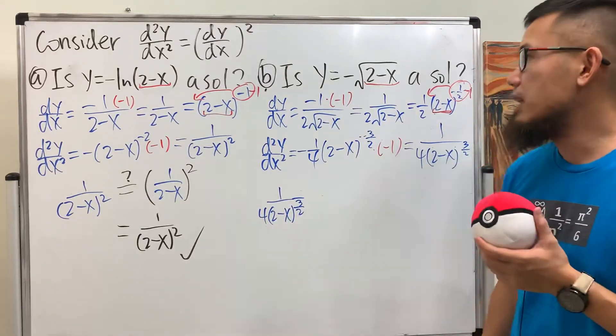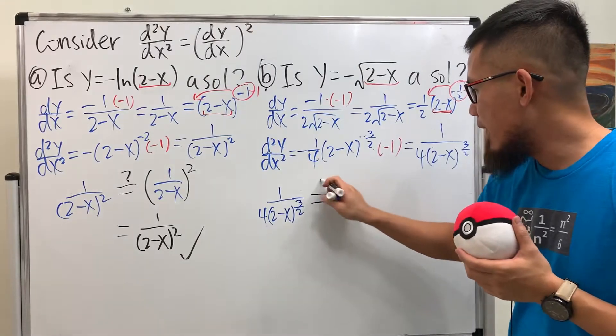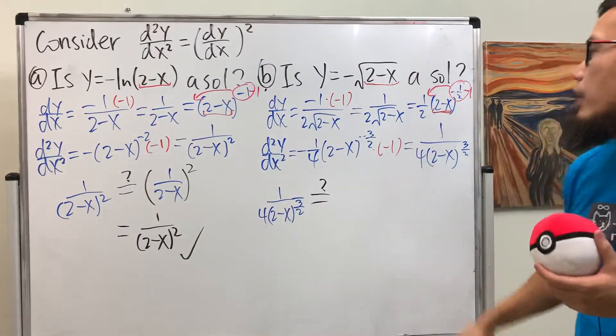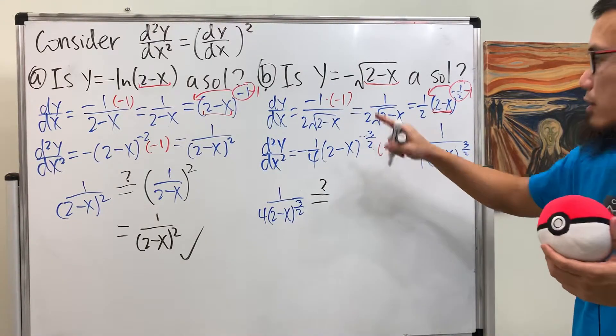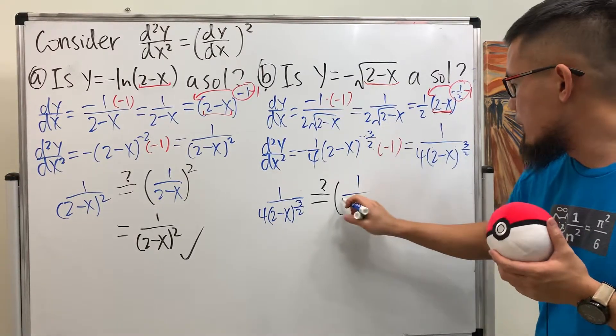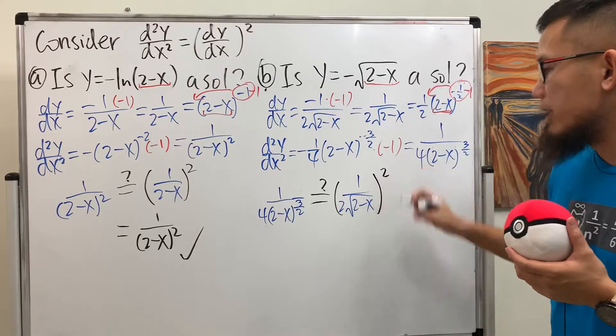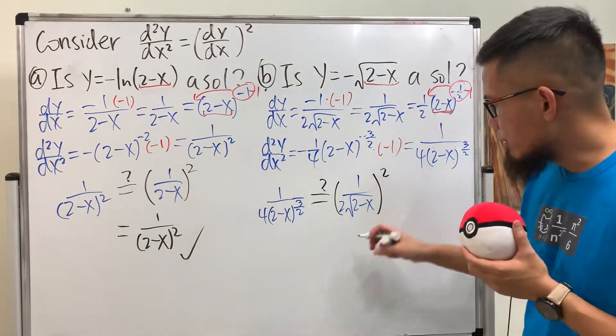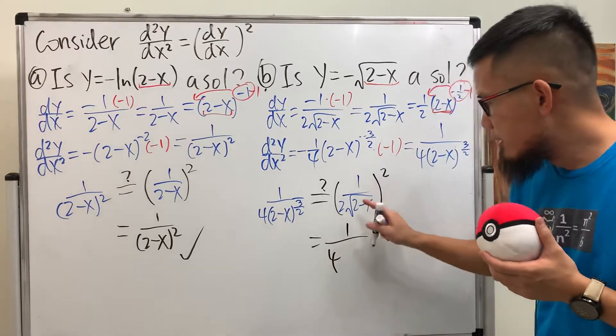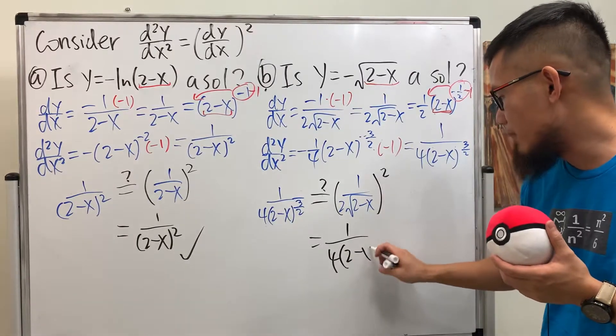So, let's put this down. And then we would like to see if this is the same as putting down the first derivative in here, and then square. I will put this version down, so we see this is going to be 1 over 2√(2-x). And then we square that. Okay, have a look. 1 over 2 square is just 1/4. Square root square, cancel, so it becomes a regular parenthesis. And then (2-x).